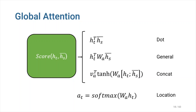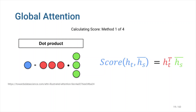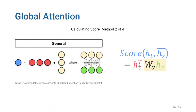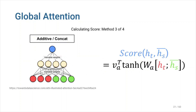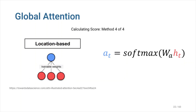What is the best way to measure the score? The paper outlines four options for doing so: dot, general, concat, and a location-based function in which the alignment scores are computed from solely the target hidden states. The dot product of two vectors is one of the most effective ways to capture their similarity. The general approach uses trainable weights, making it more flexible than the dot product. The concat or additive approach concatenates the source and target hidden state vectors and uses a small neural net to calculate the score. The location-based function simply skips the score estimation and outputs the alignment vector directly.